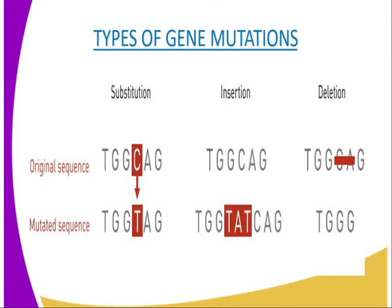Our second type of mutation is deletion. This is the removal of a gene portion. As you can see, our original sequence is TGGCAG, but the mutated sequence now becomes TG — that is to mean CAG has been deleted completely. Remember, deletion has a very harmful effect because once a gene is deleted, it might not reoccur again, and this might affect our subsequent generations.